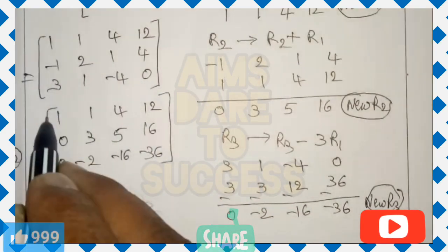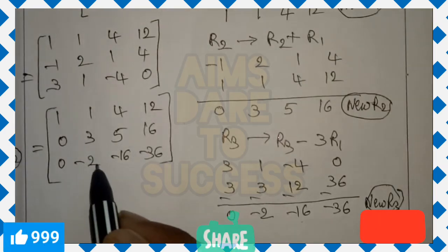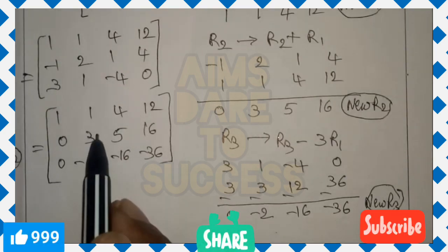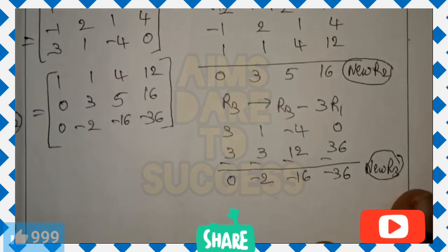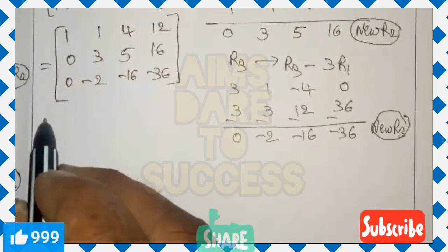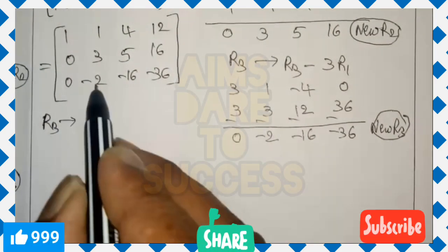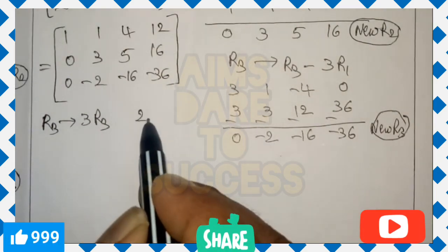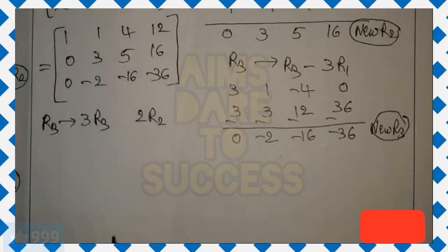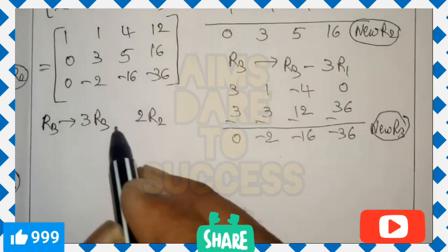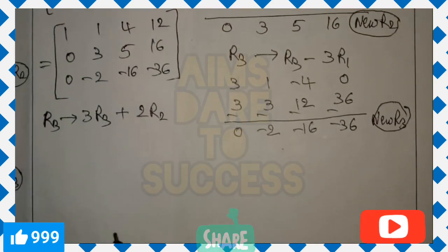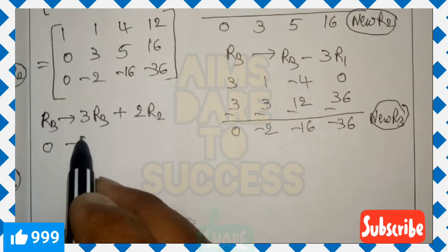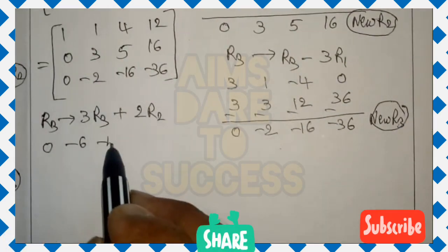Now, the second element of R3 should become 0 using R2 only — do not use R1. We take: R3 gives 3 times R3 plus 2 times R2, because the coefficients are different and we need to cancel them. Computing 3 times R3: 3×0=0, 3×(-2)=-6, 3×(-16)=-48, 3×(-36)=-108.